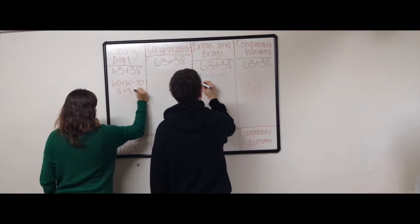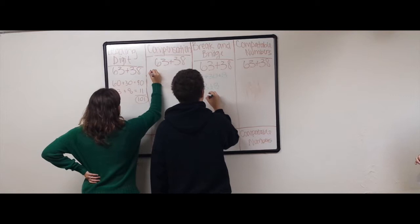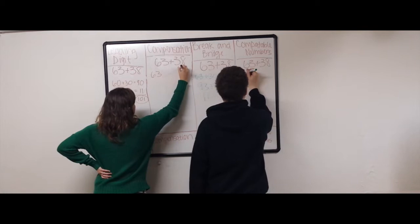Lauren is choosing to find her answer with leading digit and compensation. Where Zach is going to use break and bridge and compatible numbers to find his answer. As you keep practicing the 4 different ways of addition, you can find what's easiest for you.